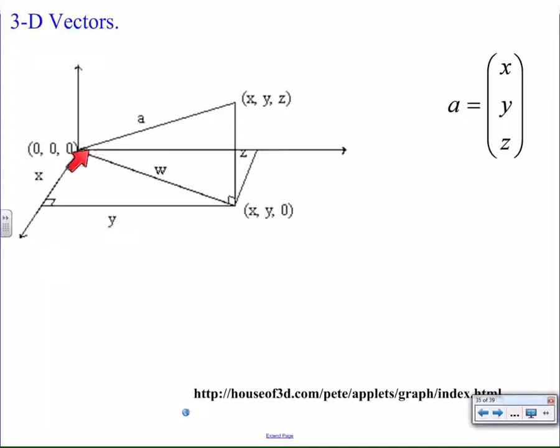So to start with, we're looking at a three-dimensional vector in space. We have the x, the y, and the z-axis for the third dimension. And we take any vector out into space, and just like any vector, it will form a right triangle with the planes.